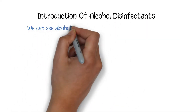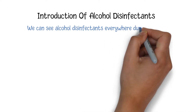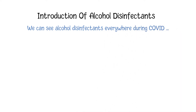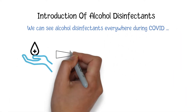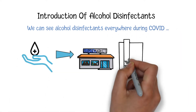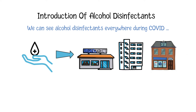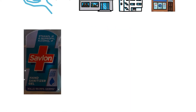During the COVID pandemic, we can easily see alcohol disinfectants everywhere in nearly all public locations such as supermarkets, offices, banks and so on. If you have a chance to look at the label of a bottle of hand sanitizer, you are very likely to see ethyl or isopropyl alcohol listed in the ingredients.